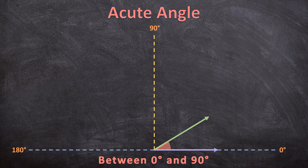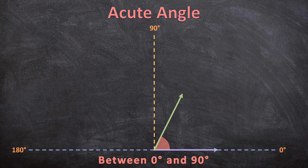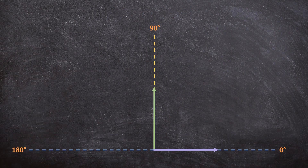Let's take that green ray and rotate it even further. Now we have a new angle, but this angle is also still between zero and 90 degrees, so this is still an acute angle. Now let's rotate this ray even further until we reach 90 degrees.